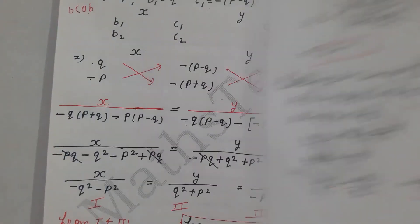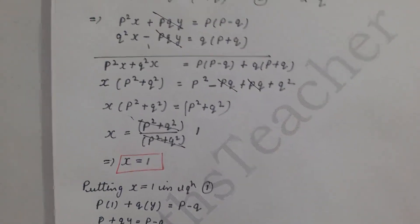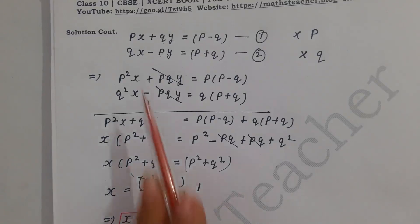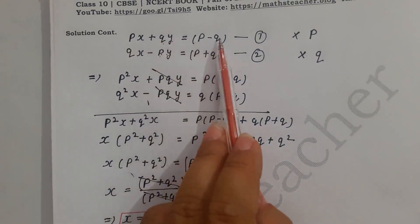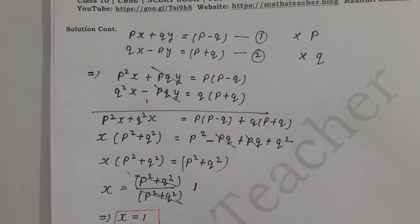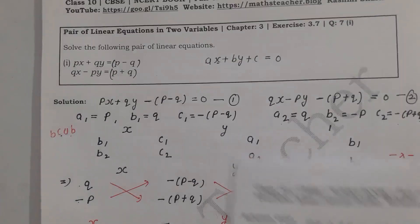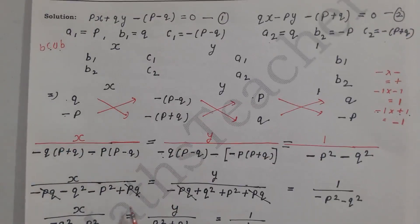Both methods give the same answer: x equal to 1 and y equal to minus 1. To verify, substitute x equal to 1 and y equal to minus 1 into the first equation: p into 1 plus q into minus 1 equals p minus q, which confirms left equals right. So try the substitution method as well for practice. In the exam you will mostly be asked for the cross multiplication method, so practice it well. Focus on the plus and minus signs carefully to avoid calculation mistakes.